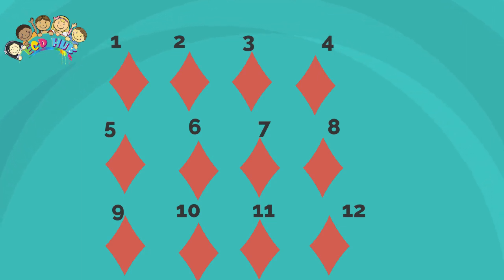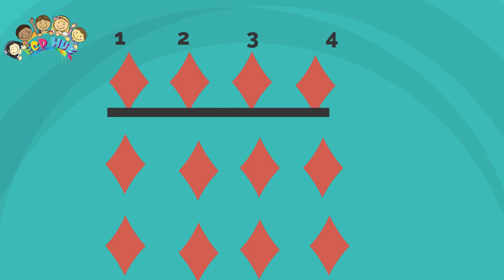Let us try another way of counting things with the use of multiplication. First we should count our diamonds horizontally: 1, 2, 3, 4. After we should count our diamonds vertically: 1, 2, 3.